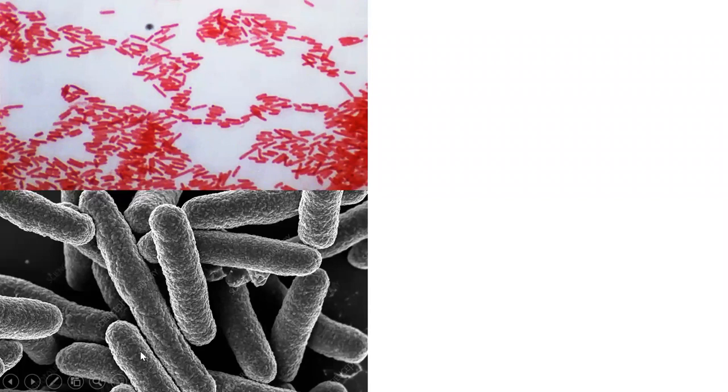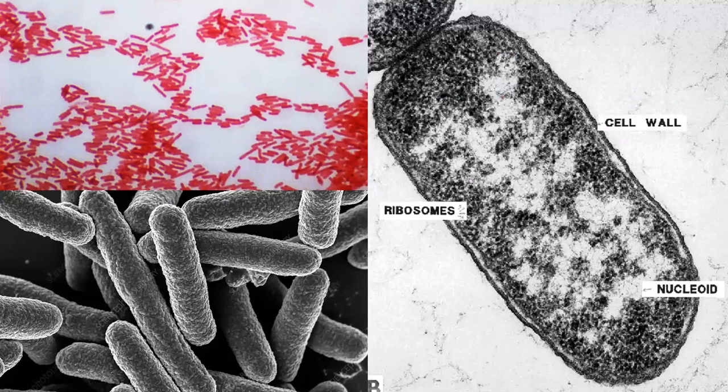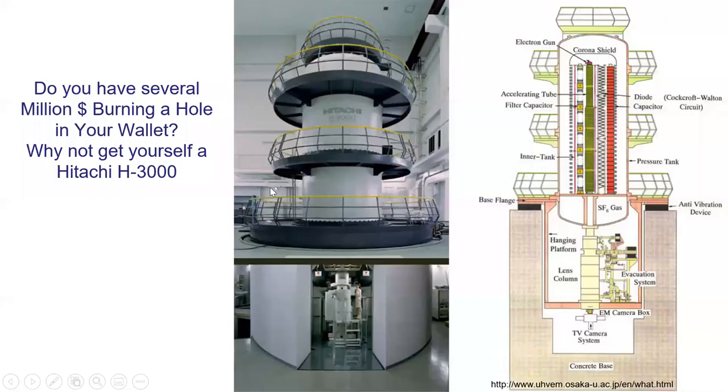Just a comparison: with light microscopy you can see E. coli but can't really make out a lot of detail — sometimes you can make out flagella and things like that. Scanning gives you the surface, and transmission gives you the inside with lots of detail.